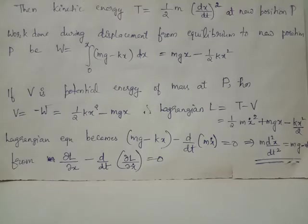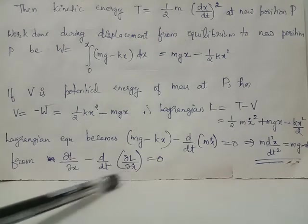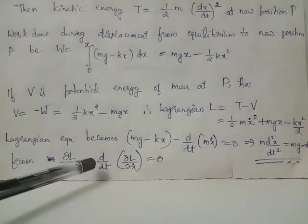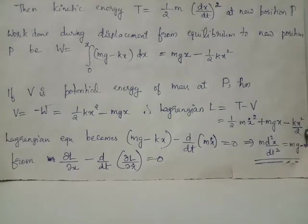We have the Lagrange's equation of the form ∂L/∂x minus d/dt of (∂L/∂ẋ) equals 0, where ẋ equals dx/dt. From this Lagrange's equation we obtain, where capital L equals half m(ẋ)² plus mgx minus kx²/2,